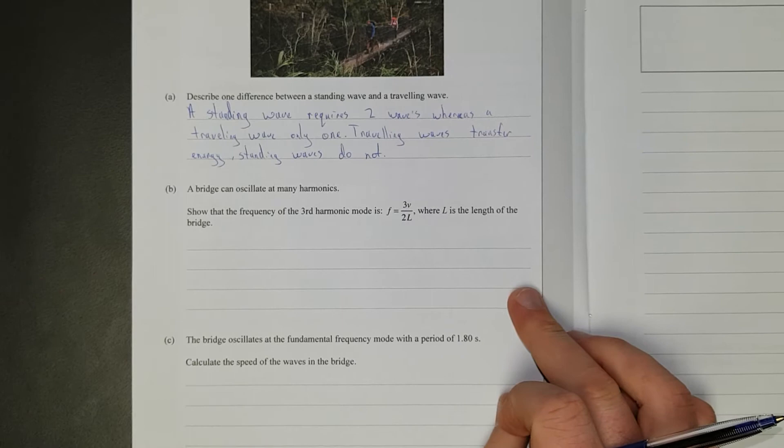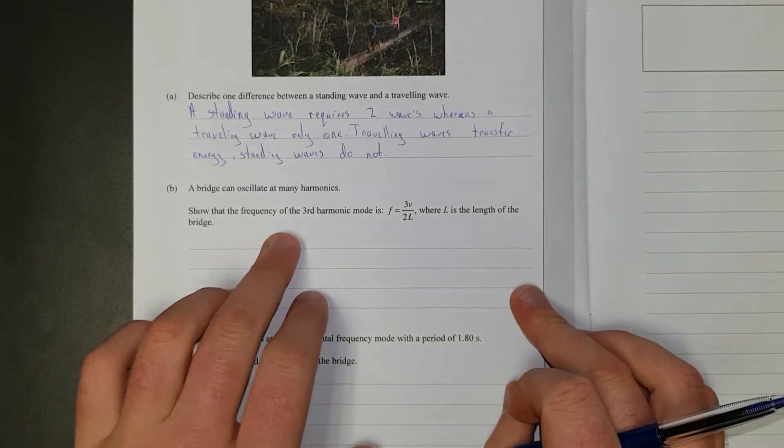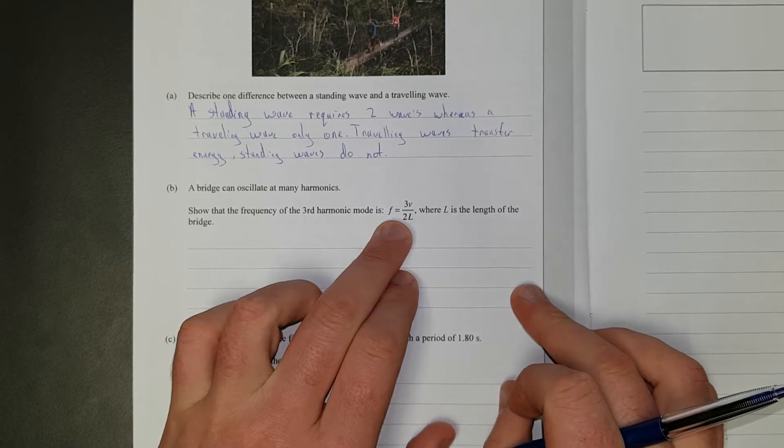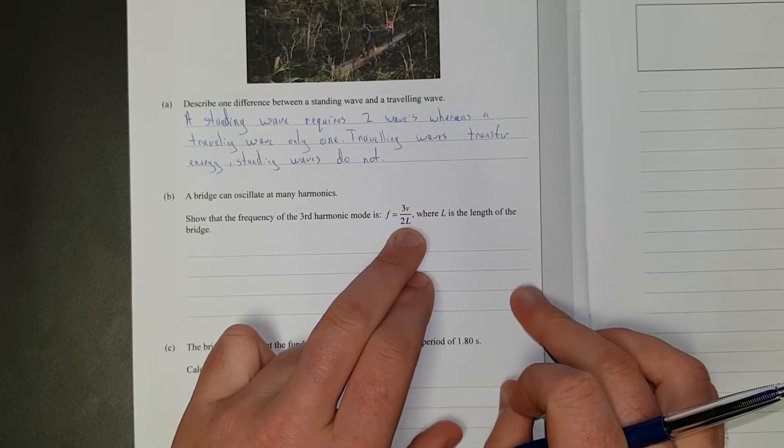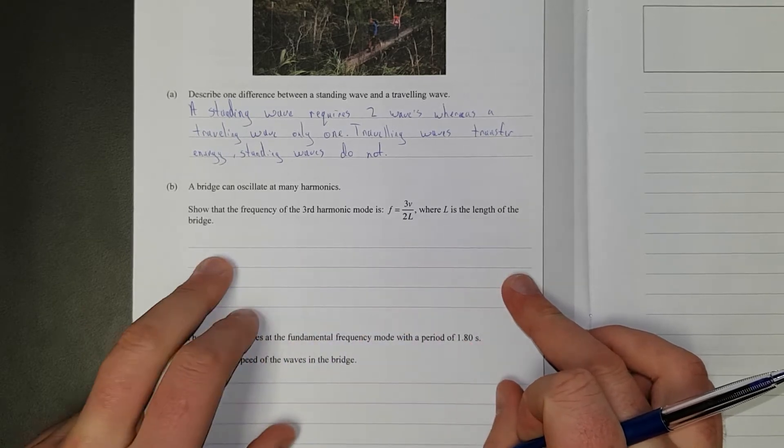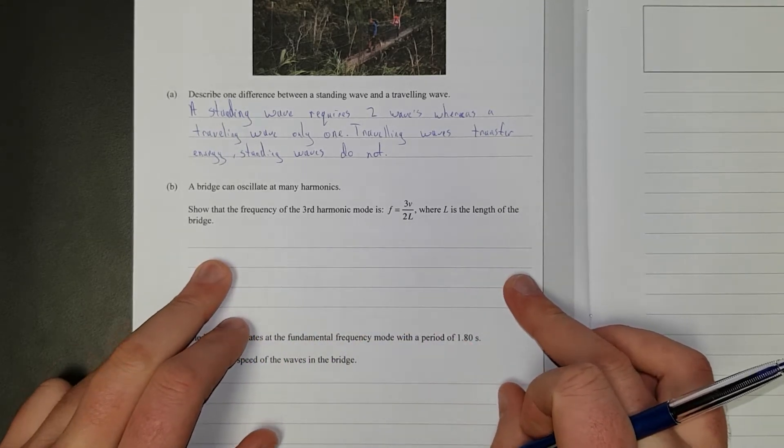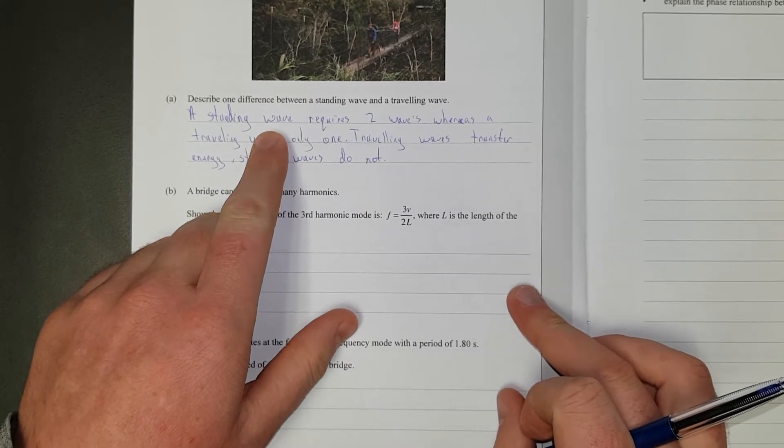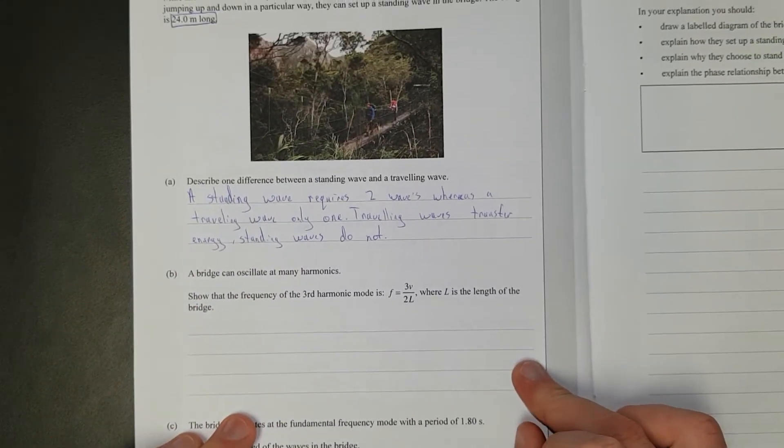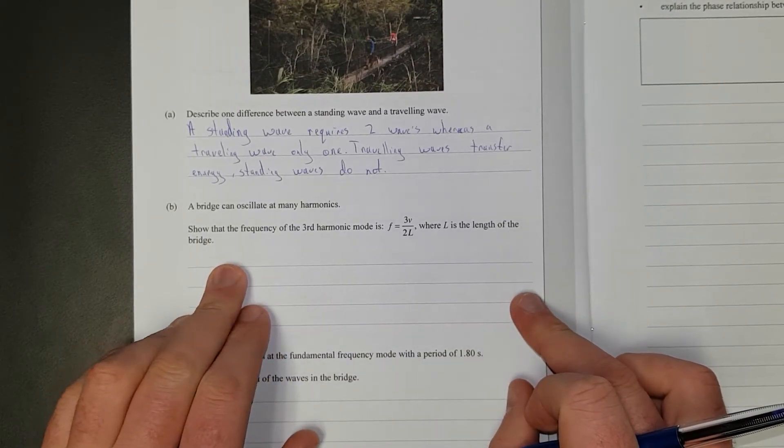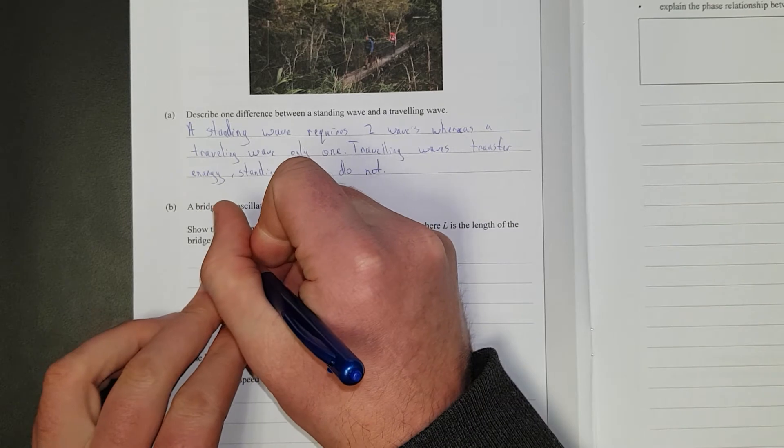A bridge can oscillate at many harmonics. Show that the frequency of the third harmonic mode is f equals three times the velocity divided by two times the length, where length is the length of the bridge. Sweet, so it's a bridge, it's fixed at both ends. So we know that both ends are going to be nodes, aka no movement. So let's just draw that. Here's a node, here's a node.